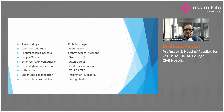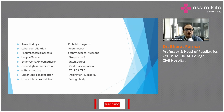X-ray findings and their probable diagnoses: lobar consolidation mostly indicates pneumococcal pneumonia. Pneumatoceles and abscess suggest staphylococcal or Klebsiella. Large effusion suggests streptococcal or Haemophilus influenzae etiology. Empyema and pneumothorax suggest Staphylococcus aureus. Ground-glass appearance with interstitial pattern suggests viral or mycoplasma etiology. Interstitial pattern also suggests TB, PCP, and tropical pulmonary eosinophilia. Upper lobe consolidation suggests aspiration and anaerobic etiology. Lower lobe consolidation suggests a foreign body.